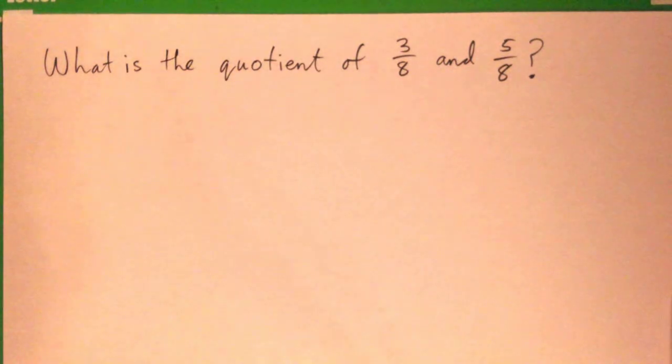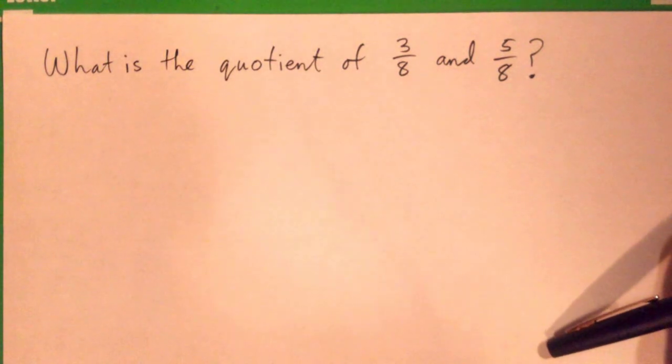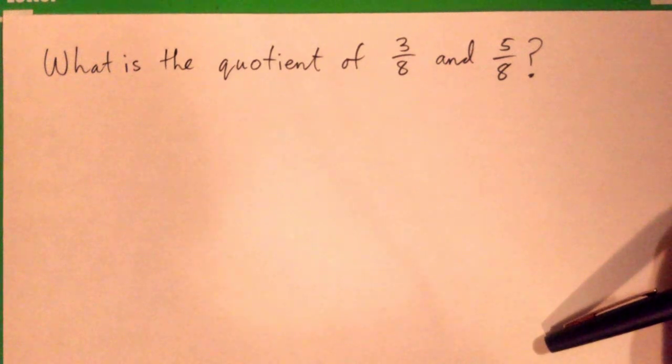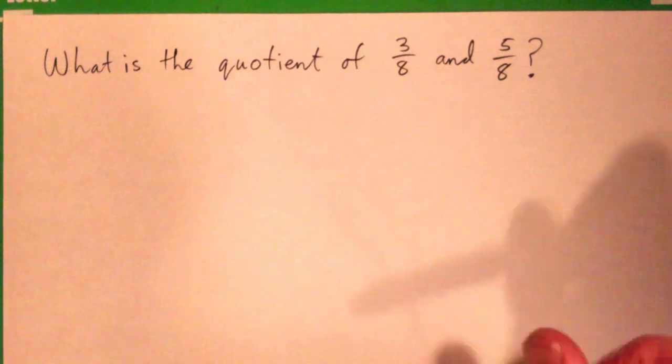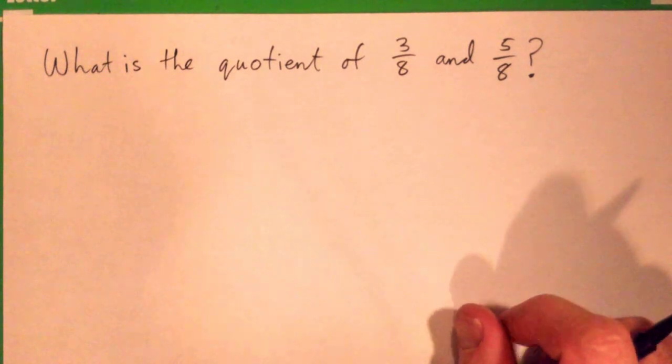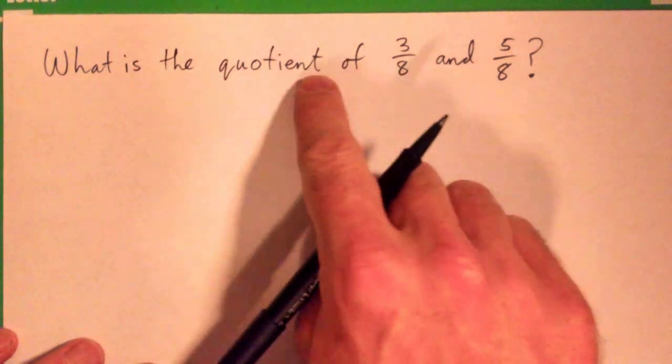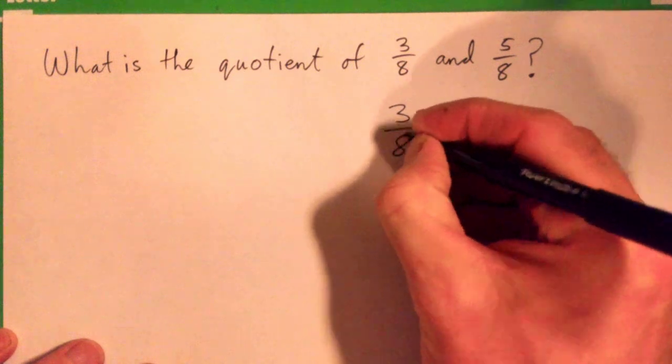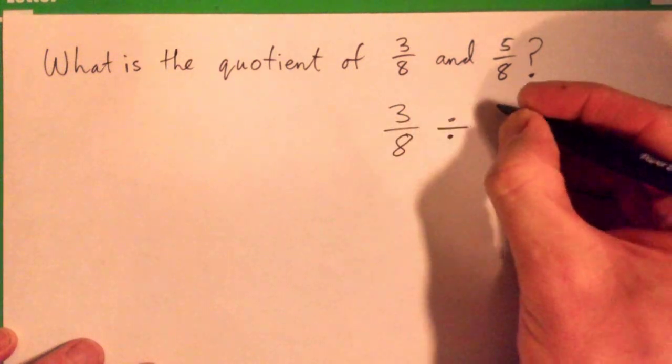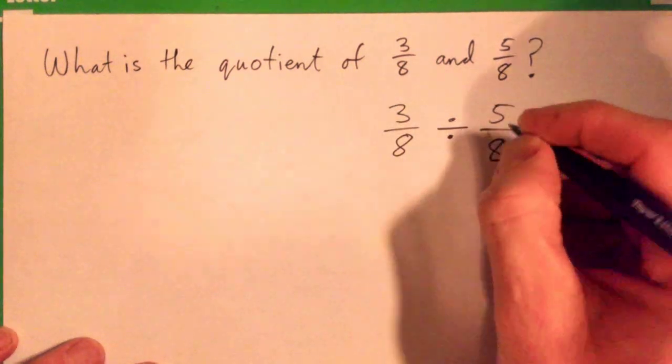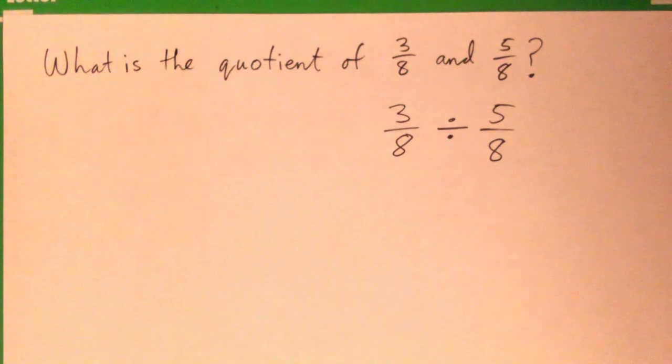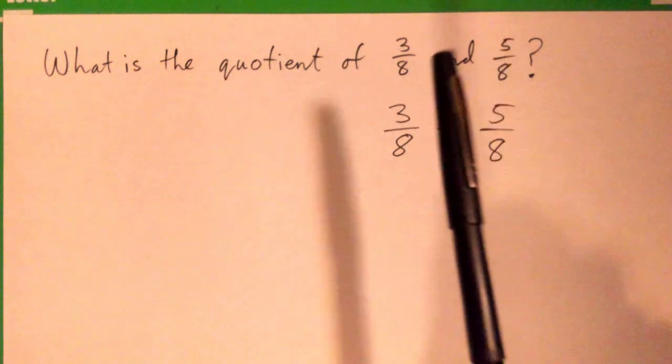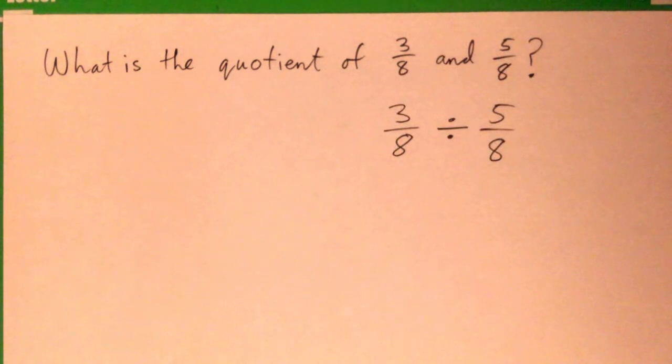So what is the quotient of three-eighths and five-eighths? This is a little bit of terminology. Whenever you see what is the quotient of something, it's always this number divided by that number. So that is a bit of memorization. That's just the math of it. It's like saying what is the answer to dividing this number by this number, right? That's what it means.